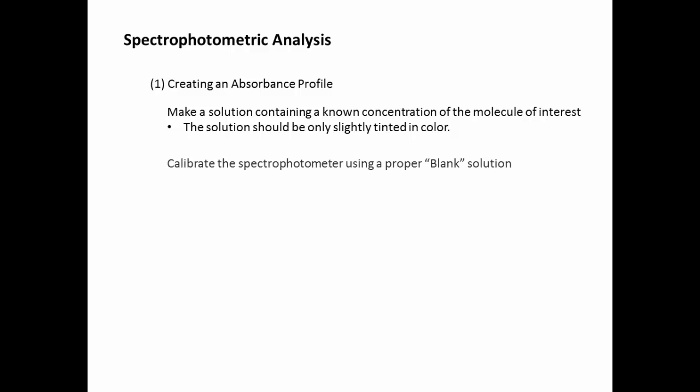Step one, creating an absorbance profile. Make a solution containing a known concentration of the molecule of interest. The solution should only be slightly tinted in color. You do not want this to be too concentrated again so that it's outside the detection limits of the device. You must remember to calibrate the spectrophotometer using a proper blank solution. Measure the percent transmittance and absorbance of this known solution at different wavelengths and go between 400 and 750 nanometers. You may not be able to obtain the absorbance value in some cases like we mentioned earlier, so from the transmittance value you'll be able to calculate that value.